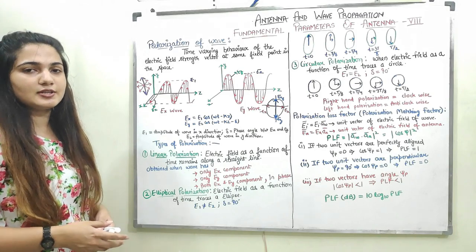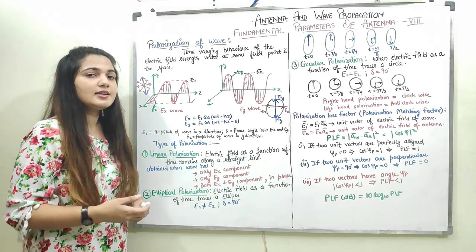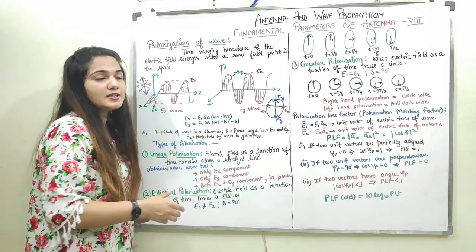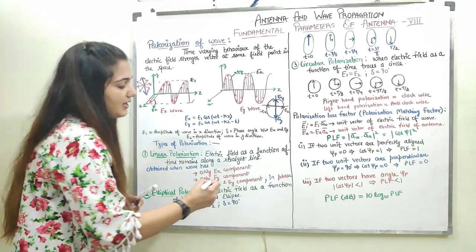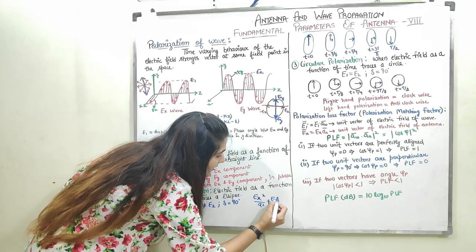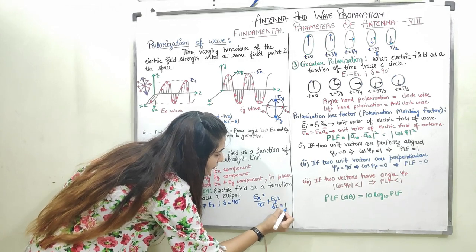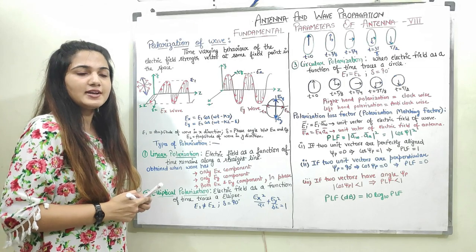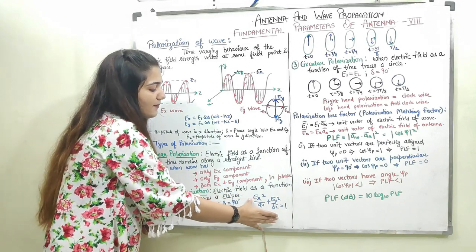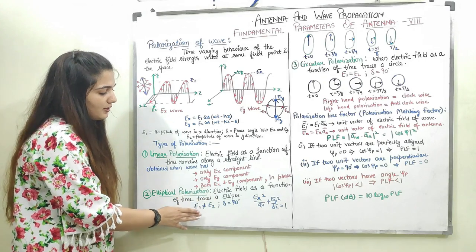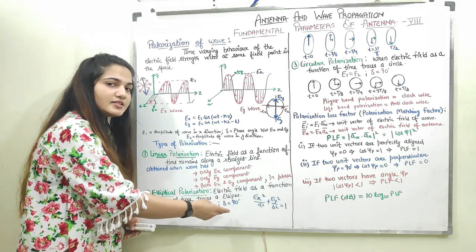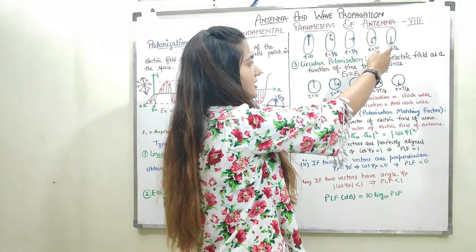Now let us come to elliptical polarization. In elliptical polarization, the electric field as a function of time traces an ellipse. The equation of an ellipse is: Ex²/A² + Ey²/B² = 1. These electric field components in the x and y directions are such that they trace an ellipse. E1 cannot equal E2 in this case, and the phase difference is always 90 degrees.